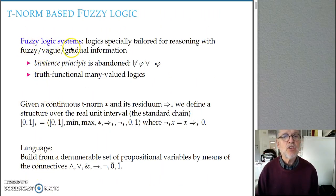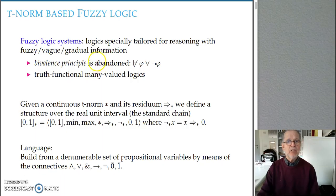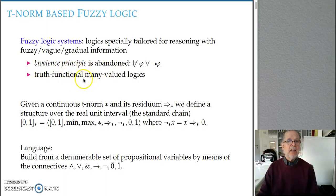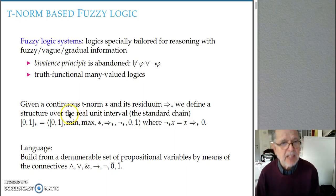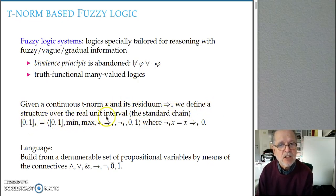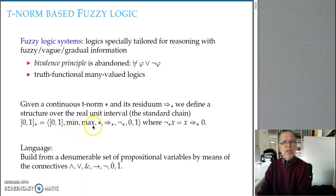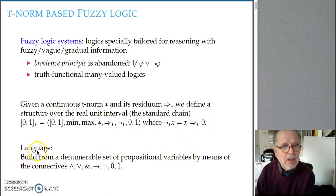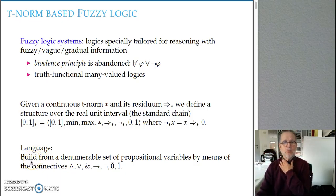On the other hand, Fuzzy Logic systems are logics especially suited for reasoning with fuzzy, vague, or gradual information. The basic principle is that we abandon the bivalence principle, resulting in many-valued logics that are truth-functional. The basic Fuzzy Logic systems are the ones introduced by Hájek in the book Metamathematical Fuzzy Logic, obtained by taking a continuous T-norm and its residuum, and defining the structure over the unit interval — the standard chain — using operations min, max, the T-norm, the residuum, negation, and constants 0 and 1.